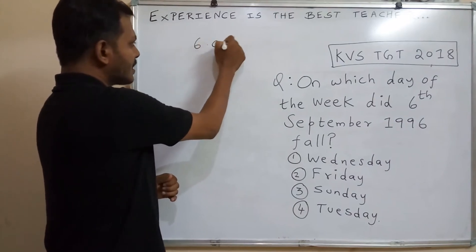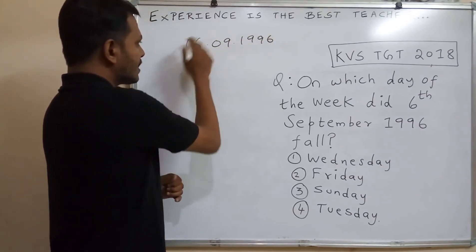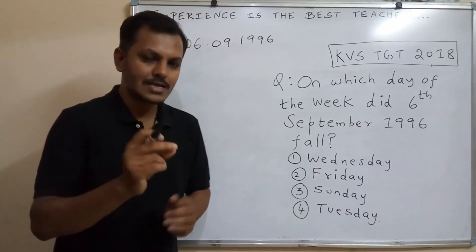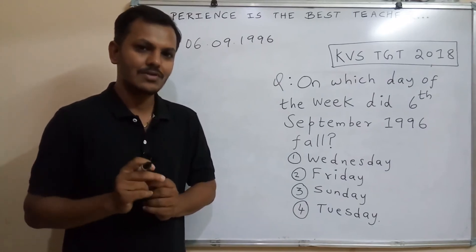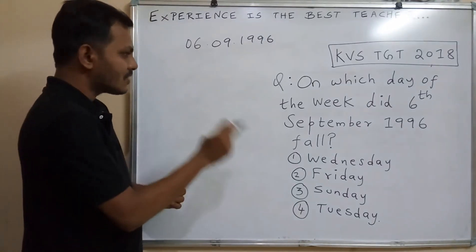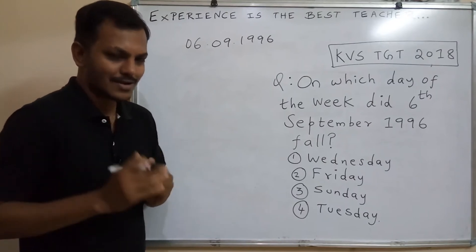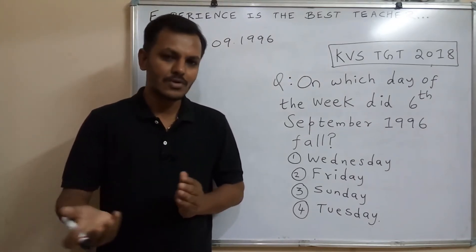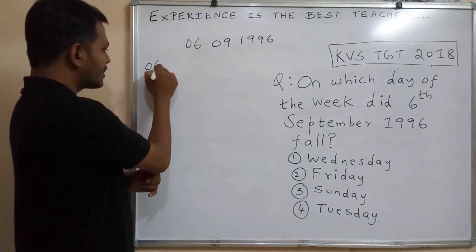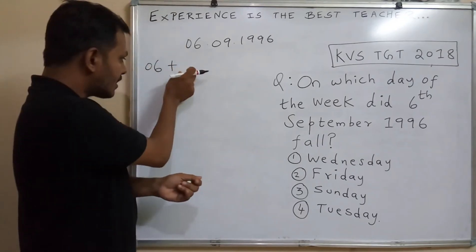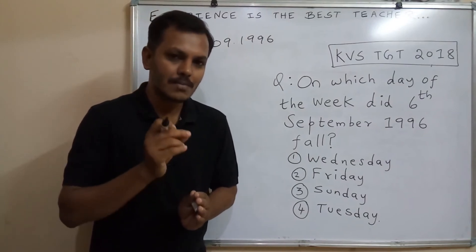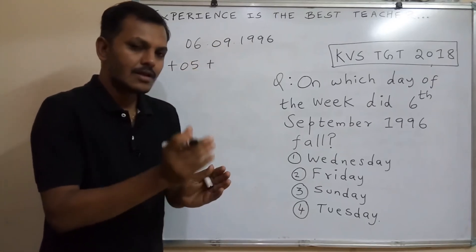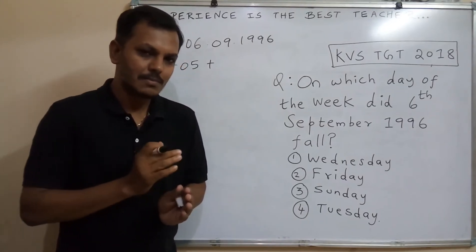For 6th September 1996, I am going to split this date into a set of five different numbers that I will add together. The first number is the date itself: 06. The second number corresponds to the month — September's code number is 5, so we write 05.